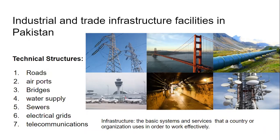Infrastructure can be physical systems or soft systems. Physical systems basically consist of things like pipelines and electrical grids, whereas soft infrastructure consists of law and order and police stations. So infrastructure is basically the basic system and service that a country needs to run effectively.